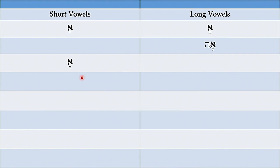The second vowel is the three dots beneath the consonant — once again I'm using the aleph only as an indicator where the vowel will go. These three dots are called a segol, and the sound these three dots make is 'e', like as in met. The corresponding long vowel to this is two dots, and the sound it makes is 'e', like eight.